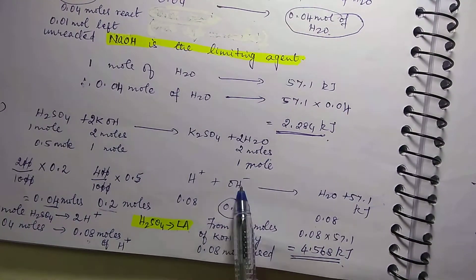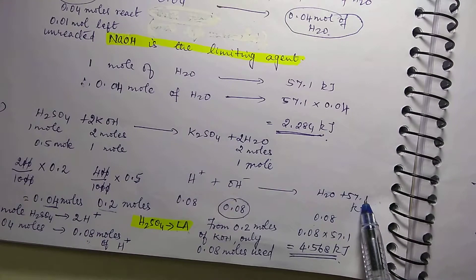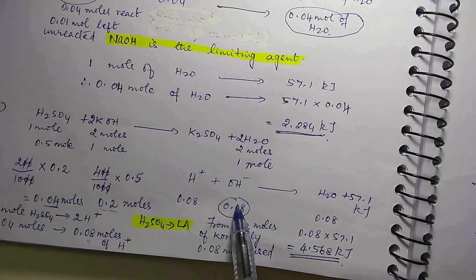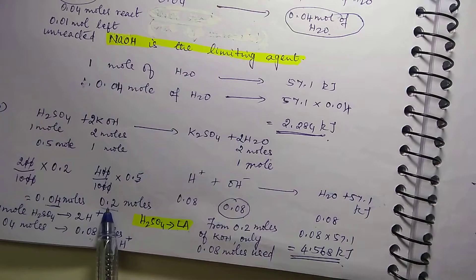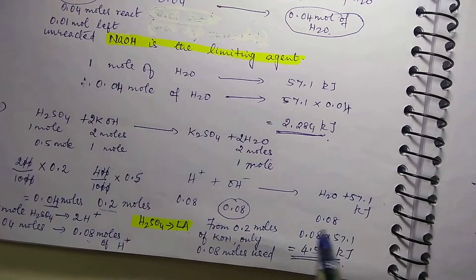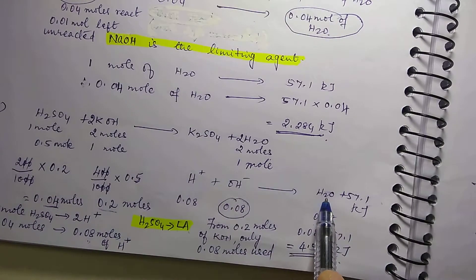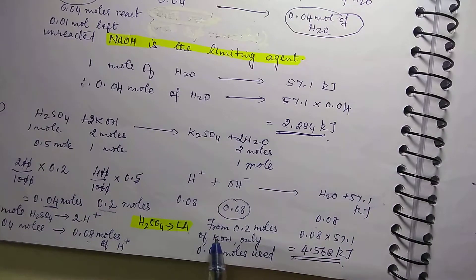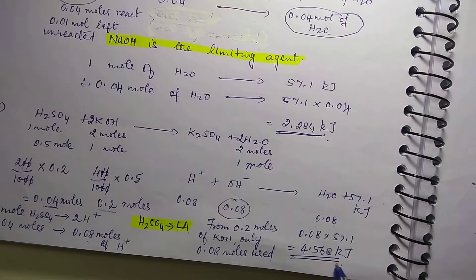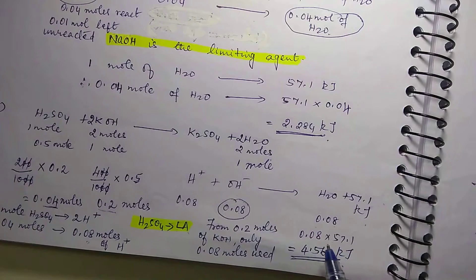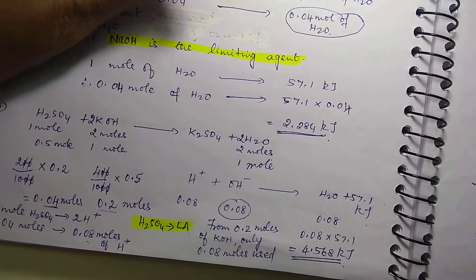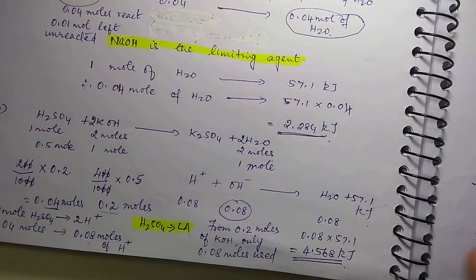Now 1 mole of this will give you 57.1 kilojoule. So here, this is going to react 0.08 and this is also 0.08, out of 0.2. So 0.12 moles of KOH will remain unreacted. Remember that. So if this is 1, this is 1, this is also 1. So if this is 0.08, this is also 0.08, then this is also 0.08. So you have to find out now, corresponding to 0.08 moles, the amount of energy released is 0.08 times 57.1. You will get this many kilojoules of energy. These types of numericals also you have to be familiar.